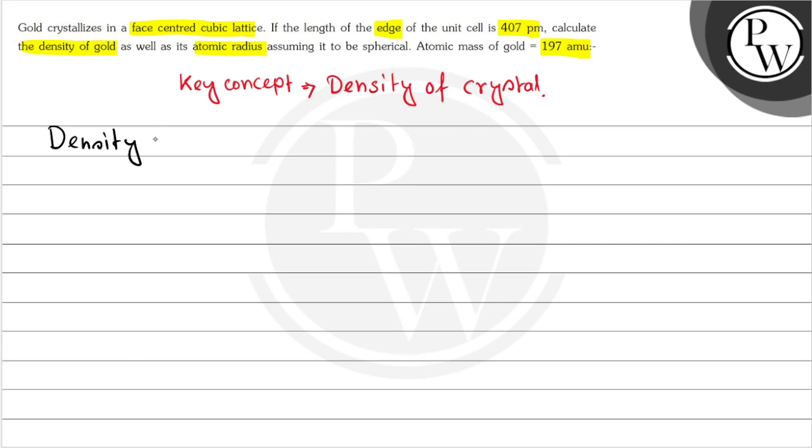Density of crystal is given by rho equals z times m divided by a cubed times N_A.